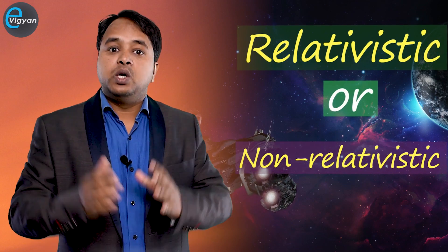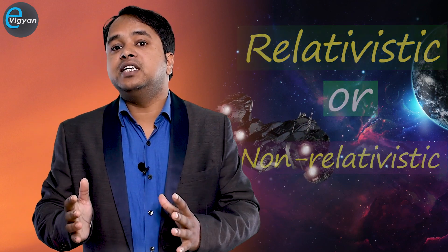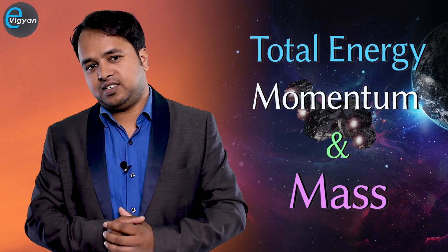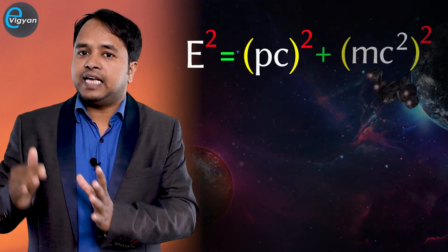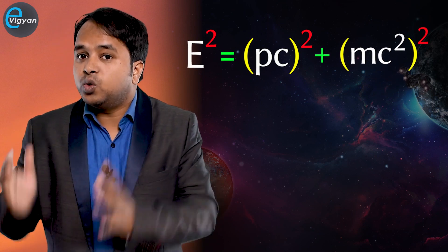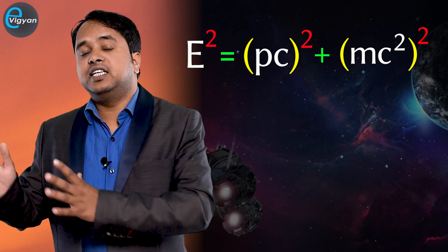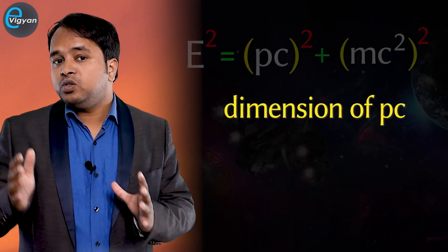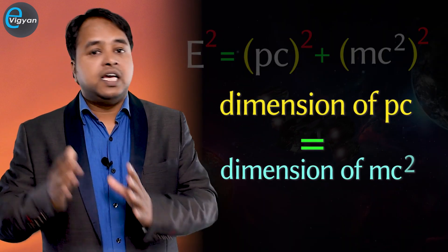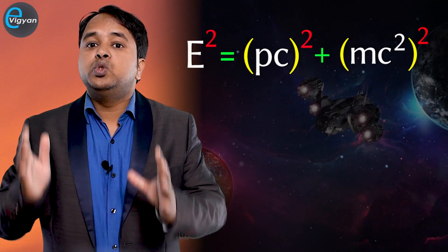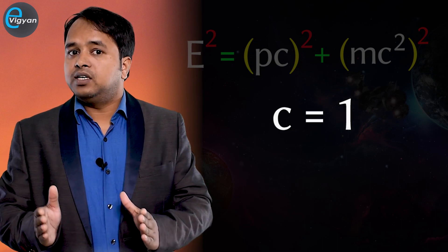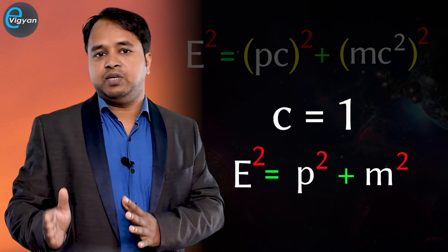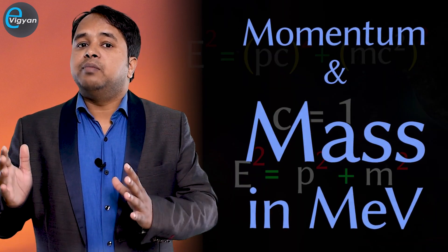For any kind of system, either relativistic or non-relativistic, we have a famous formula that nicely relates the total energy, momentum, and mass of the system. That formula is E squared equal to (pc)squared plus (mc squared) squared. Here E is total energy, P is momentum, M is mass, and c is the speed of light. From dimensional analysis, one can easily say that the dimension of pc equals the dimension of mc squared equals the dimension of E. But if you choose a unit in which c equal to 1, then the equation becomes E squared equal to P squared plus M squared, and you can measure momentum and mass in MeV.